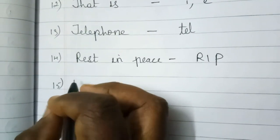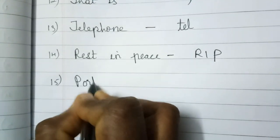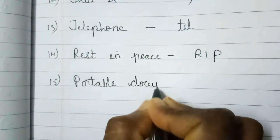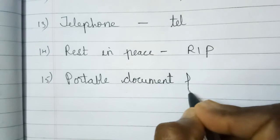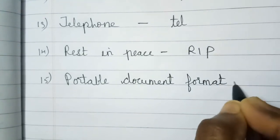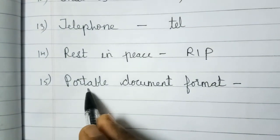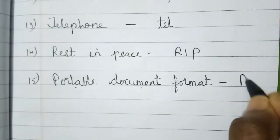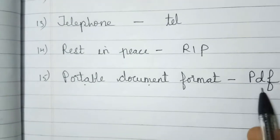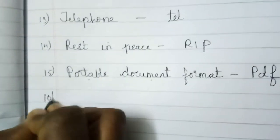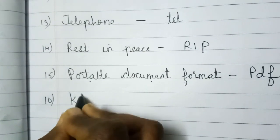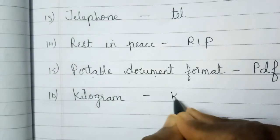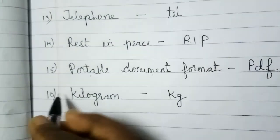Fifteenth one, portable document format. Children, this is nowadays used very commonly. Portable document format means P-D-F. Sixteenth one, kilogram. Kilogram means K-G. Seventeenth one.